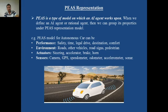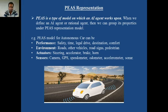For example, in the last lecture we discussed that for an autonomous car agent or taxi driving — suppose this is our agent and we want to design it — first of all we have to specify its PEAS model. Until we specify the PEAS model, we cannot design our agent. Autonomous car, driverless car, and taxi driving are all the same thing.